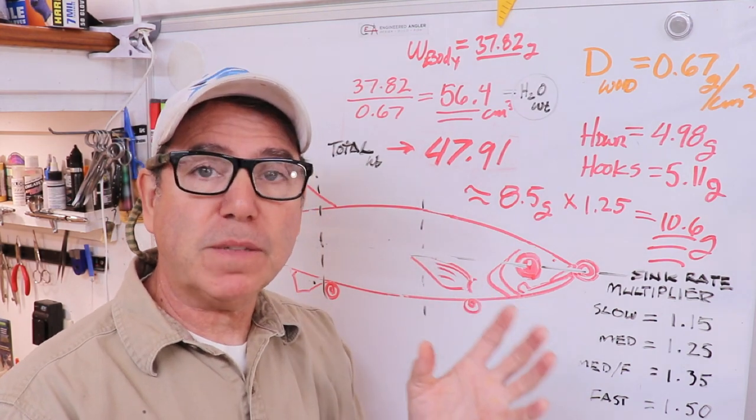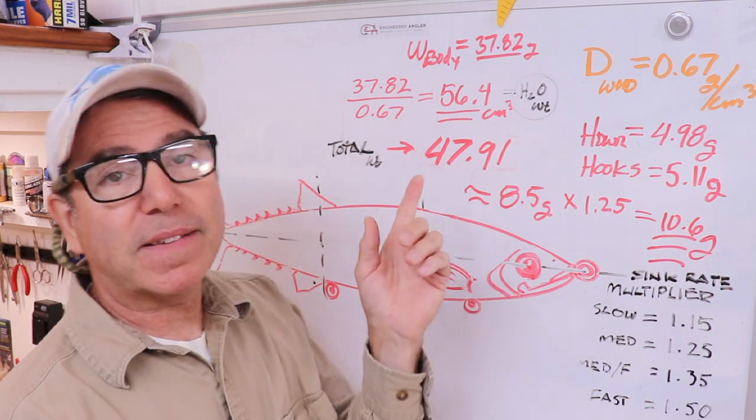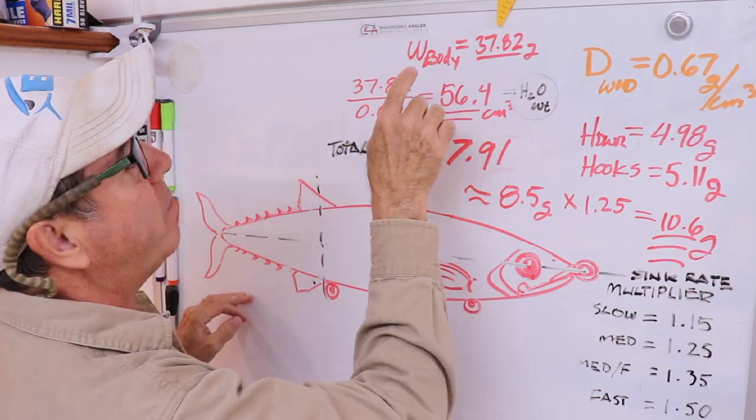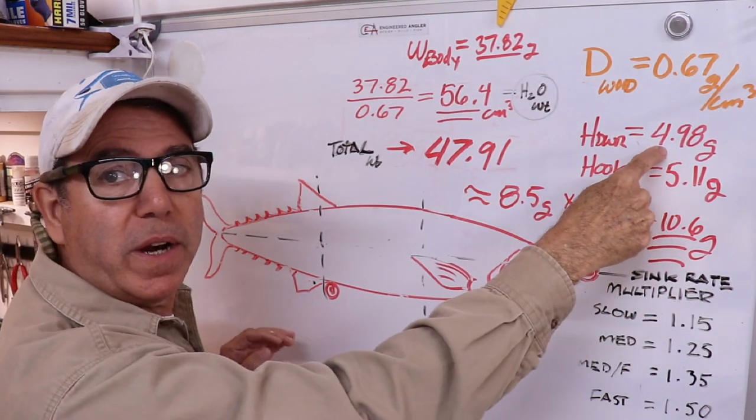I know that my lure has to weigh 56.4 grams, the same amount as the water it displaces, to be absolutely neutral in the water theoretically. But since I don't want it to be neutral, I want it to actually sink—in fact, I want it to sink kind of fast.